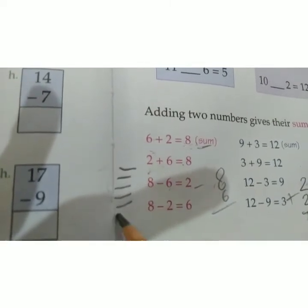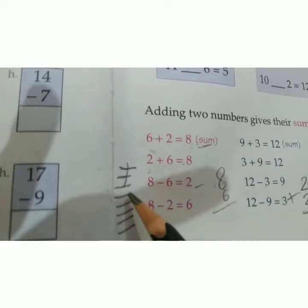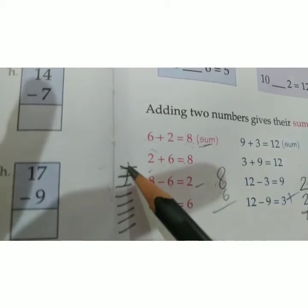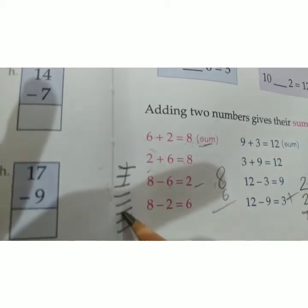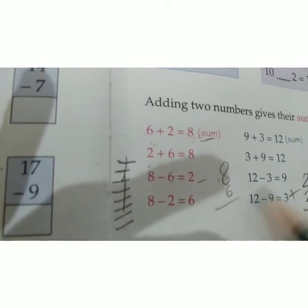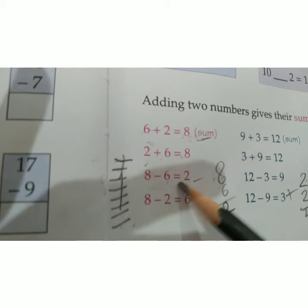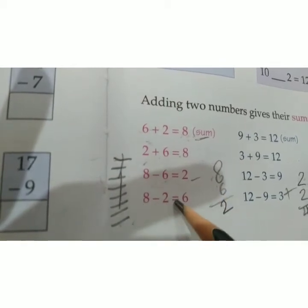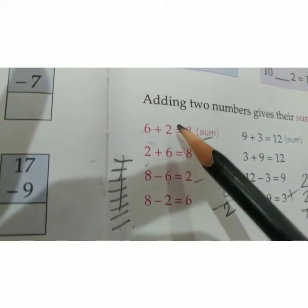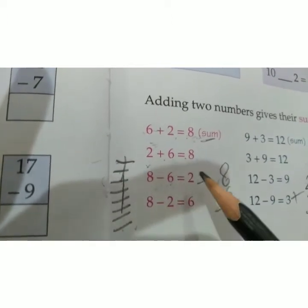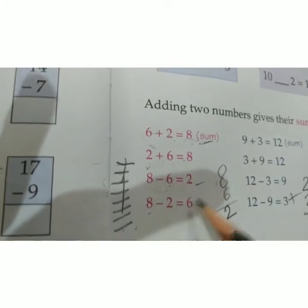Count from 1 to 8 and cut 6 — what remains is 2. So 8 minus 6 equals 2, and 8 minus 2 equals 6. See: 6 plus 2 gives 8; 2 plus 6 also gives 8; 8 minus 6 equals 2; 8 minus 2 equals 6. All these numbers are related to each other.